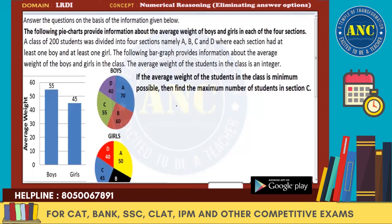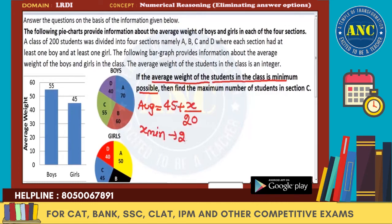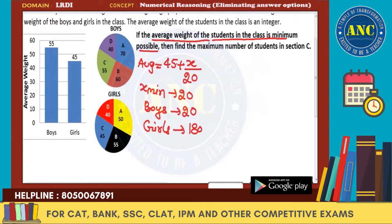For Question 1 — if average weight is minimum, find the maximum number of students in section C. Average = 45 + x/20 is minimum when x is minimum. Since x cannot be 0, minimum x = 20 (boys = 20, girls = 180). Now we need to maximize section C. For section C to be maximum, the remaining three sections A, B, D must be minimized.